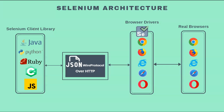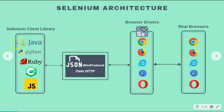The code gets transferred to the Selenium WebDriver through the JSON wire protocol. Whatever you have written gets converted into JSON format through the JSON wire protocol over HTTP, and it gets transferred to any of these browser drivers. Here you have the WebDriver and the supported browser drivers. For example, if you are trying to execute your script in the Chrome browser, you will have the corresponding Chrome driver and then the real browser.